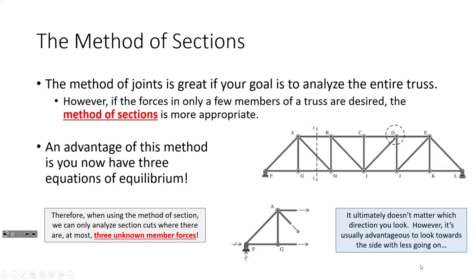Another advantage of the method of sections: if you have a really large truss and you want to find the force in a specific member, you might have to solve three, four, or five joints before you get to that member — or you just cut a section, sum some moments, and you're there. The method of sections is a surefire way of speeding up a truss analysis problem on the FE exam. It's very common on the FE exam to be given a truss and asked for the force in one member, and the method of sections gets you there faster.